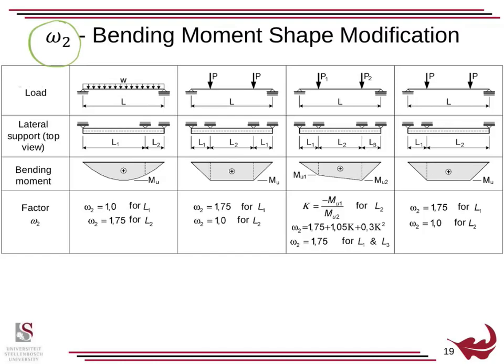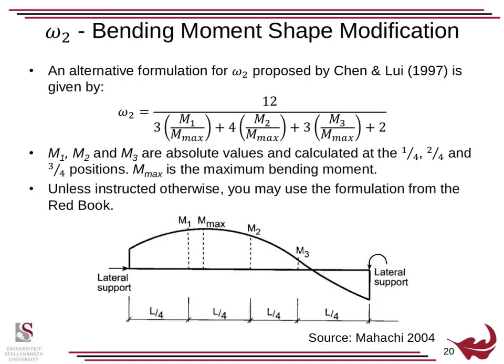There are alternative ways of calculating omega 2 that are more accurate. When SANS 10162 gets updated, we may have an equation like this, but at the moment not. This takes into account the shape more accurately. This is actually a better formulation of omega 2, but it's also more complicated. We're not going to deal with this at the moment; I'm just letting you know this exists. We can use the more simplified code and Red Book equations.